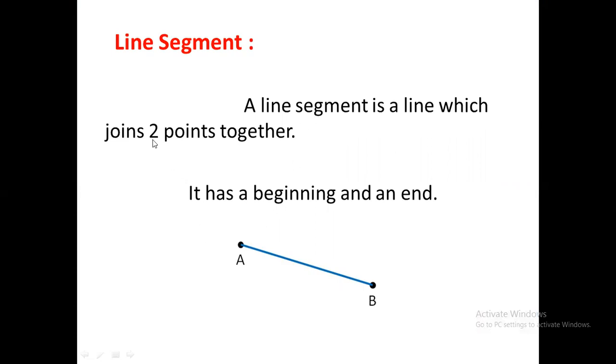So A and B, these are two points. A is a point. Points mean a dot. It's a point and B is also a point. And this line is joining A and B. So the line which is going to join two points together is called a line segment. It has a beginning point and an end point.